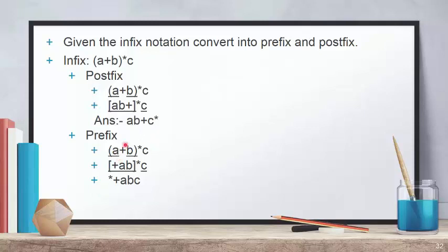We then treat plus A B as one operand and C as the second operand. We place the star symbol before this combined operand. So the resulting prefix expression is: star plus A B C. This is one way to solve the infix to postfix or prefix conversion.